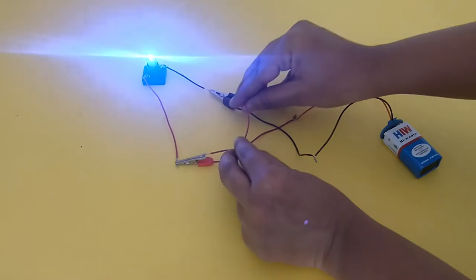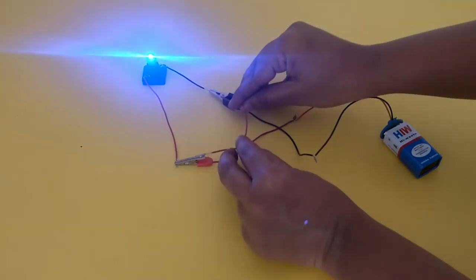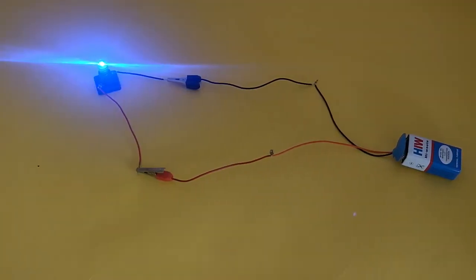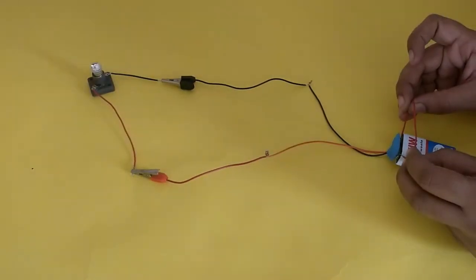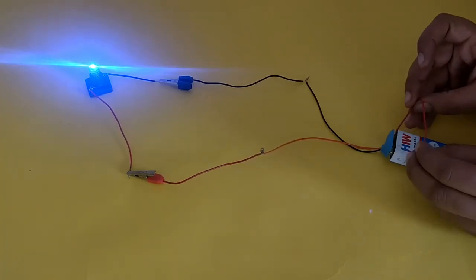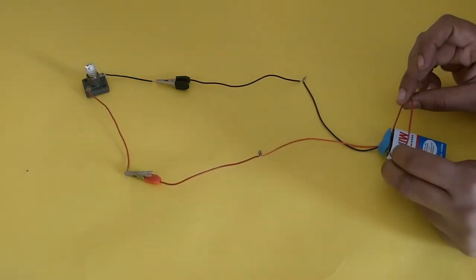Now repeat this by touching the wire across the crocodile clips and the terminals of the 9-volt battery. You will notice again the torch bulb stops glowing.